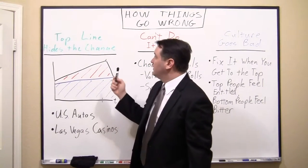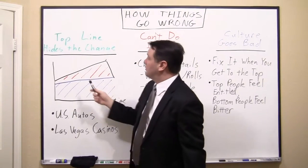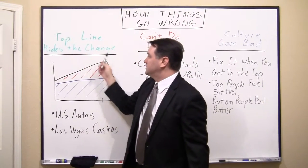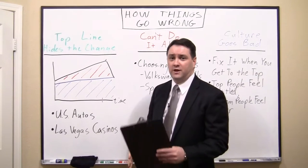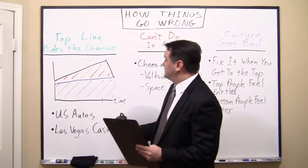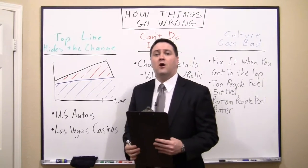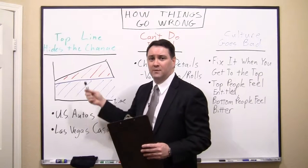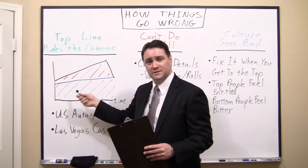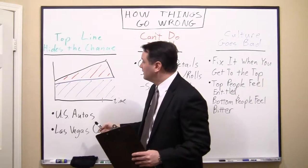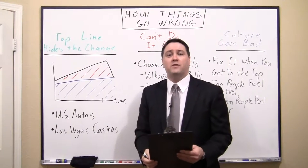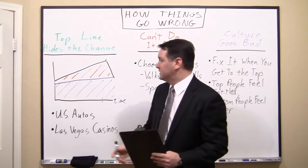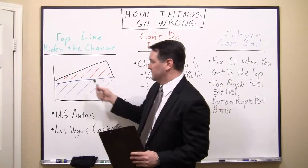I call this: what do you do? One of the ways in which things go wrong is that you have a top line that is hiding a change of the components underneath it. Specifically, the examples I'm going to use are where a change in the components of the top line — the segments in the market, if you will — increase the volatility without that being realized by the management, because they were focused on the top line.